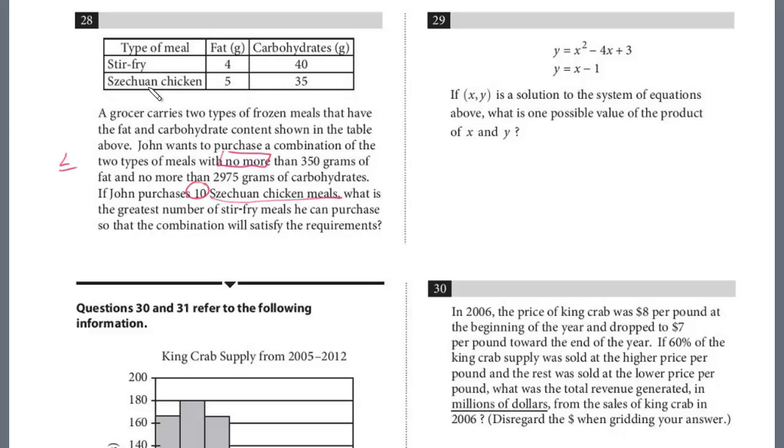For the Szechuan, we can figure out how much fat and carbohydrates he's used so far. This is going to be 50 grams of fat, and this is going to be 350 grams of carbs. So we've got these constraints. Let's start with the 350, that's the total amount. Now, we've already used up 50, and so what's left is going to be 300, and we're going to take that 300 and divide by 4.